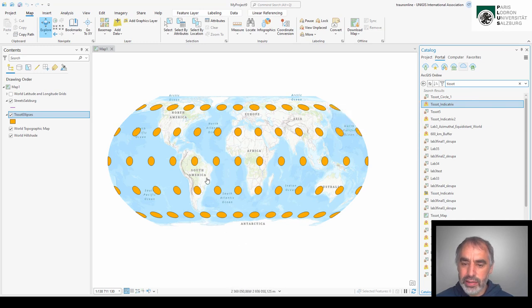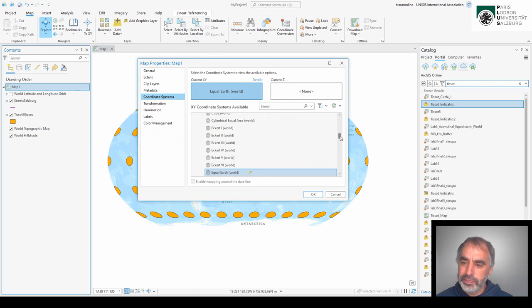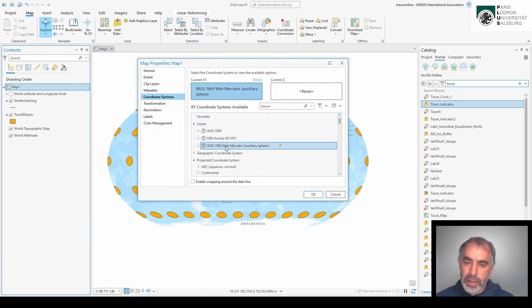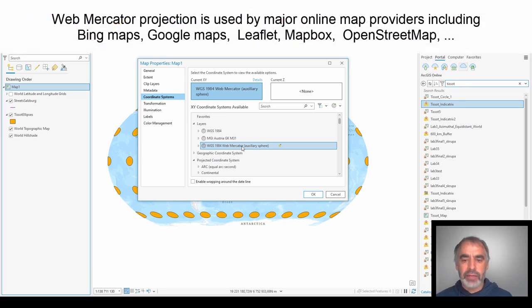And it's nice to visualize projection properties by using the so-called Tissot Indicatrix. I looked this up at ArcGIS online and you see that's a set of circles that are positioned all over the earth. And in reality it's circles of the same size and you see what a projection makes out of that. In this case you can see in this Equal Earth projection that the area of the circles stays the same but the shape of the circles is deformed. And we can check another projection that is very popular that is the web map Mercator projection.